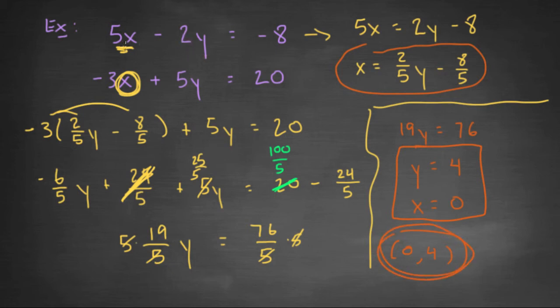You can check it of course. 0 - 8 = -8, 0 + 20 = 20. Yeah, that works out perfectly fine.